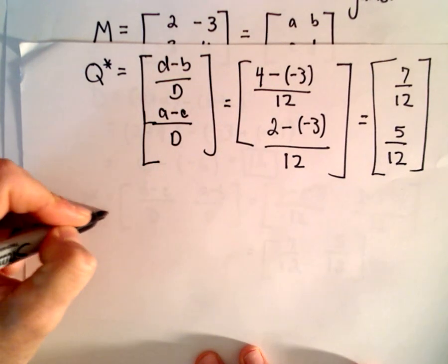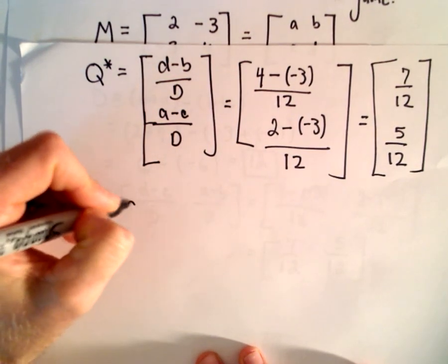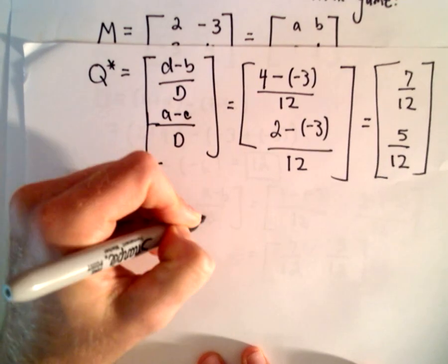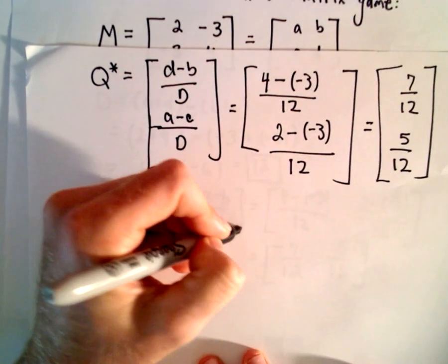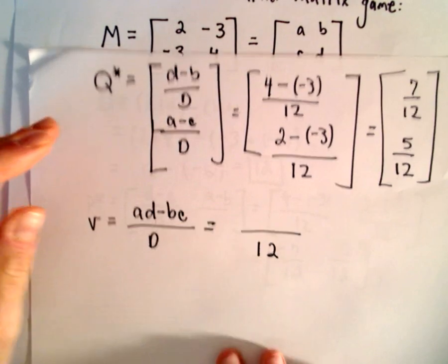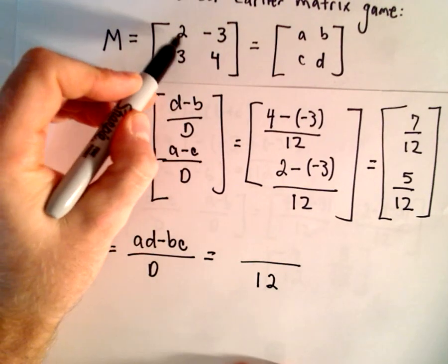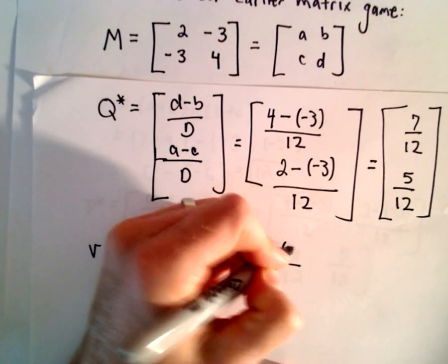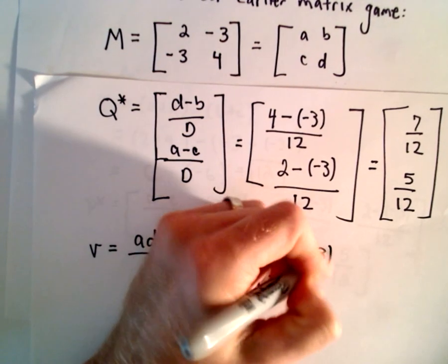The last thing we're going to do is compute the value of the game. And to get the value, we take AD minus BC over capital D. We've already seen that the value for capital D is 12. So we'll take A times D, which will be 2 times 4, minus B times C, so negative 3 times negative 3.